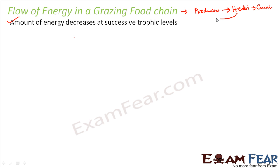When herbivores eat the producers, they get their food and some energy. Similarly, when herbivores are eaten by carnivores, carnivores get their food and energy. So basically, energy gets transferred from producers to herbivores to carnivores. The question is: how much energy gets transferred from one trophic level to the next?